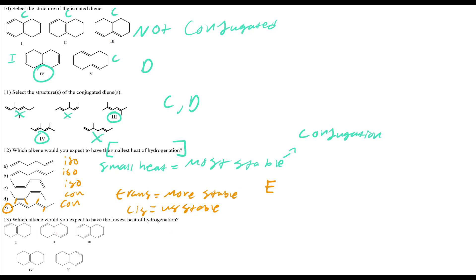Question 13: which alkene has the lowest heat of hydrogenation? Most stable wins. Checking each structure for conjugated systems: structure 1 has one conjugation, structure 2 has two conjugations, structure 3 has two conjugations, and structure 4 and 5 have none or one. Only structure 2 has two conjugated systems. More conjugation equals more stability, so structure 2 is the most stable and the correct answer.